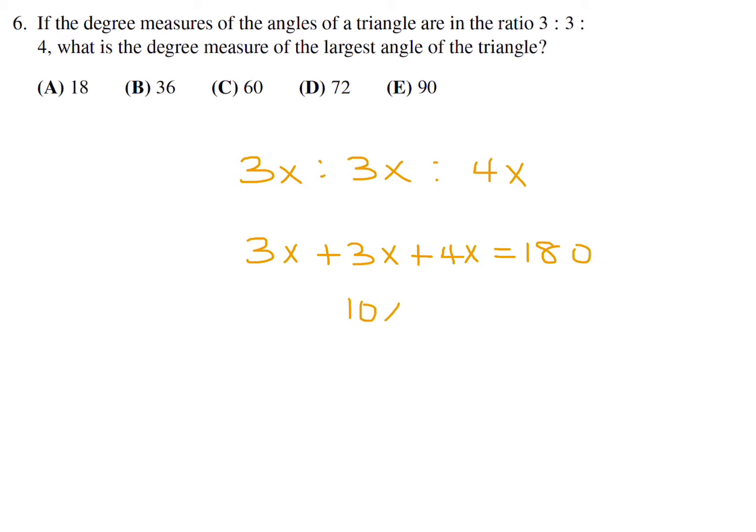So that means 10x is equal to 180, and therefore x is equal to 18. Now the largest angle is 4x, so therefore that would be 4 times 18, and that is 72. So number 6, the answer is D.